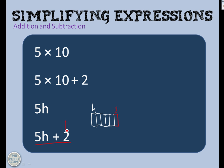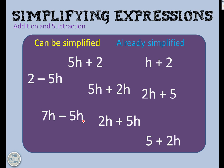This, my friends, is as simplified as that expression can get. They remain apart — you cannot simplify the h's with the non-h's. This is a constant; it is always 2. It has not suddenly become 2h. So we do not add them.